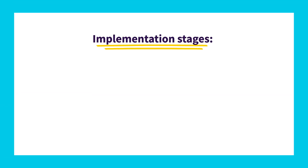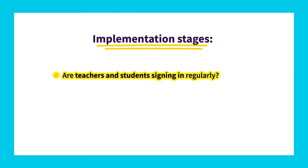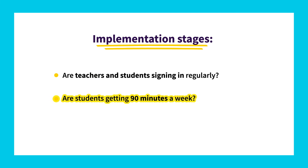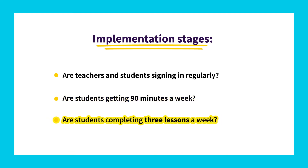To summarize, you can use the School Goals Report to help your school move through each stage of implementing Zearn. First, ensure that all teachers and students are signing in to Zearn regularly. As classroom use grows more consistent, make sure students are learning on Zearn for at least 90 minutes each week. And finally, support your students in completing three or more grade-level lessons each week.